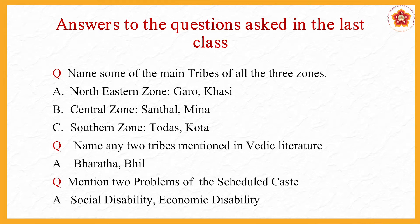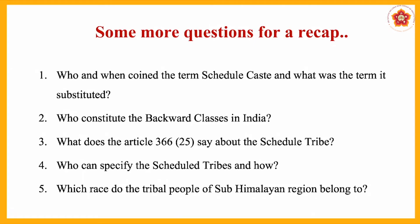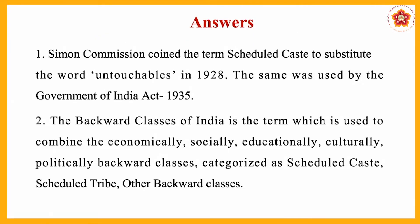The next question was: mention two problems of the scheduled caste. Out of the three, we have taken two — social disability and economic disability. Another question: who and when coined the term 'scheduled caste' and what was the term it substituted? Simon Commission coined the term 'scheduled caste' to substitute the word 'untouchables' in 1928. The same was used by the Government of India Act 1935.